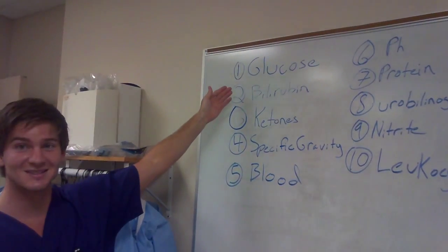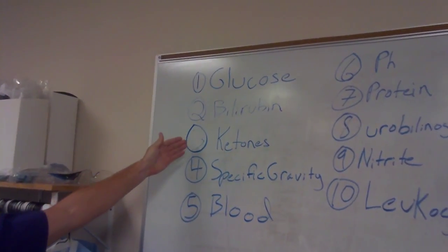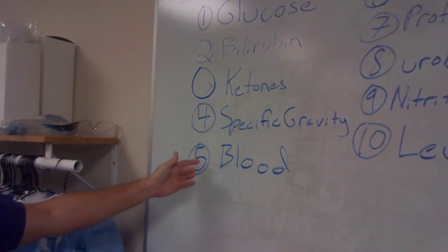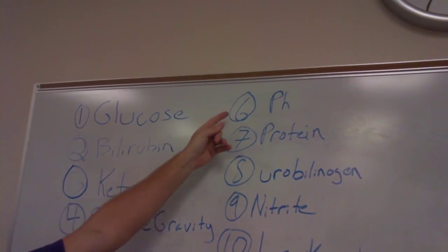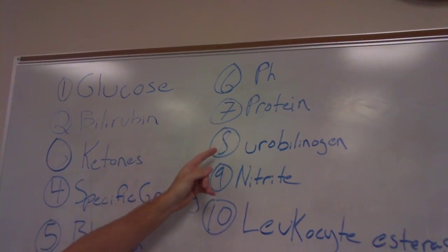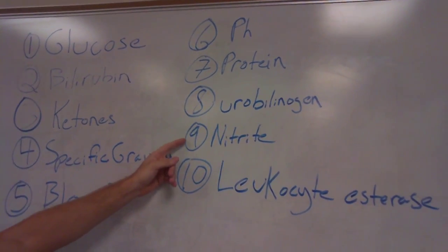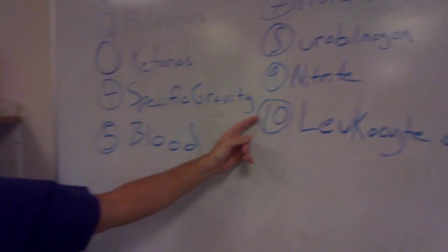Your reagent test strip tests for 10 items: first one is glucose, bilirubin, ketones, specific gravity, blood, pH, protein, urobilinogen, nitrite, and leukocyte esterase.